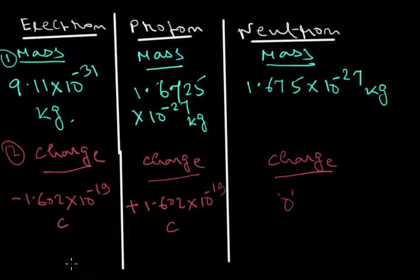That means electron is negatively charged, proton is positively charged, and neutron doesn't contain any charge.